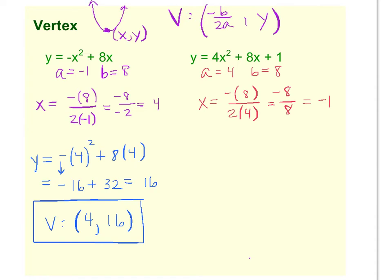Now, once you get the x to find the y, you just plug it back into the original equation. So y equals 4, parentheses, so I'm going to plug in a negative 1 for all those x's, plus 8 times negative 1, plus 1.